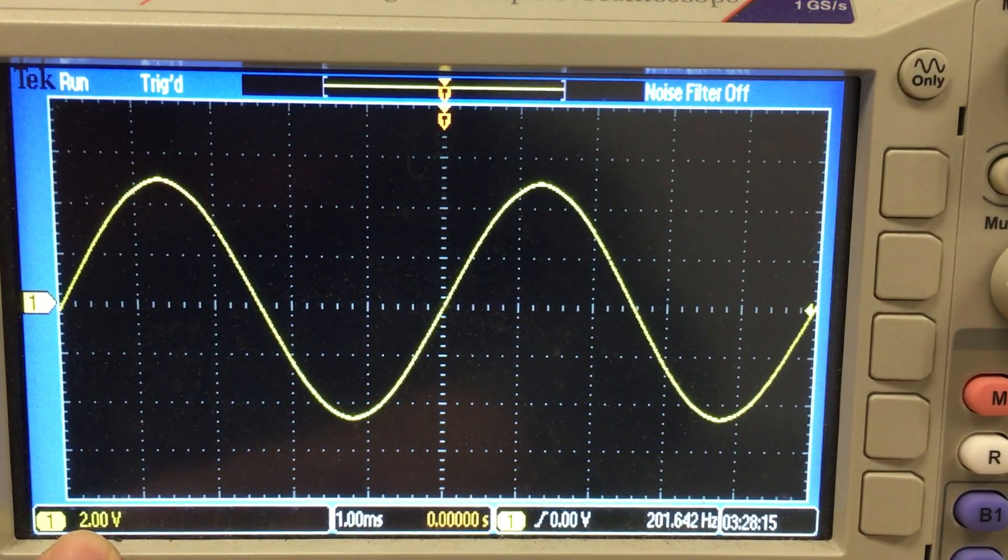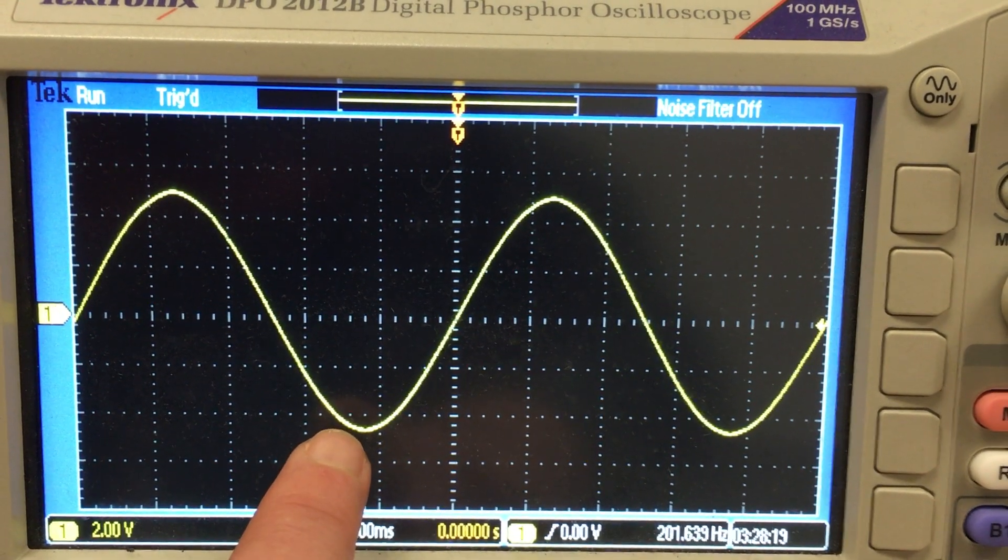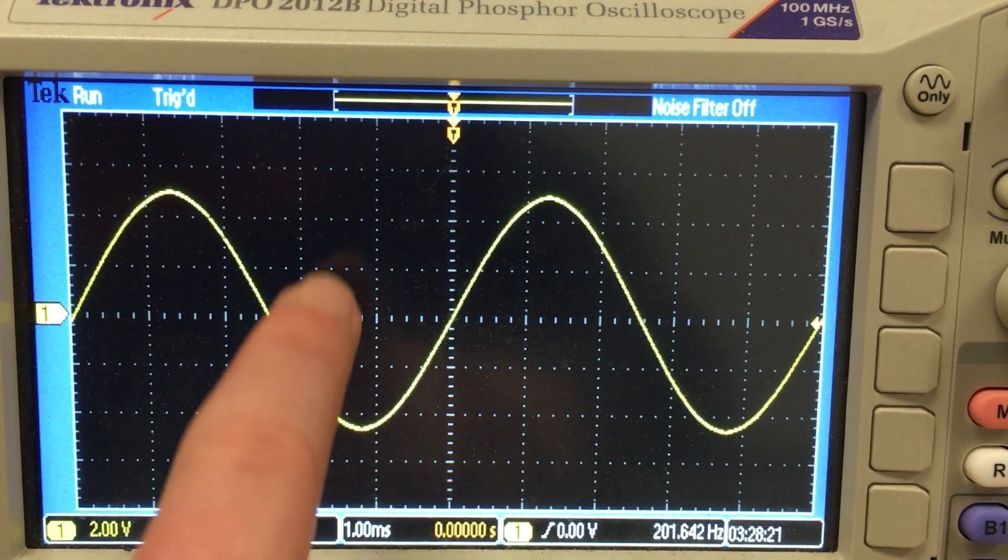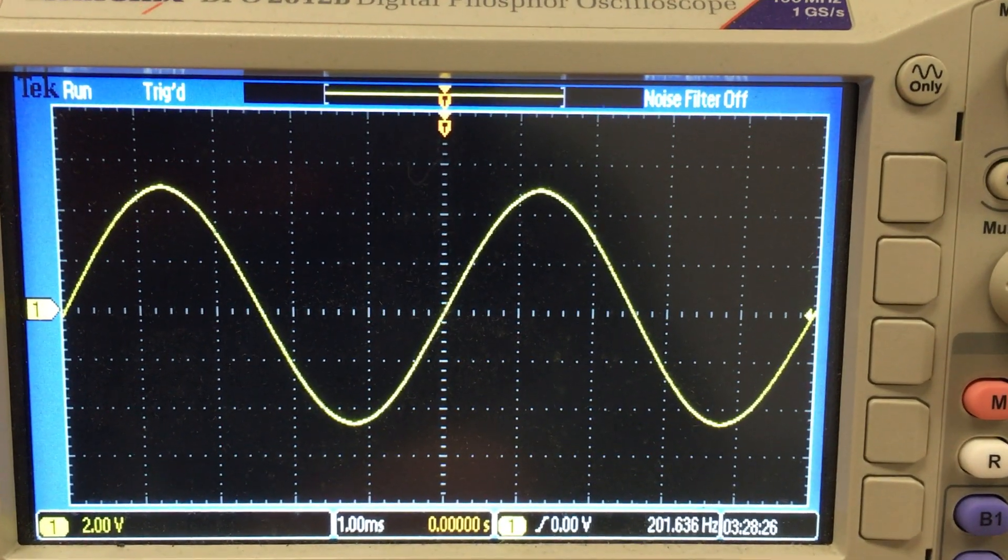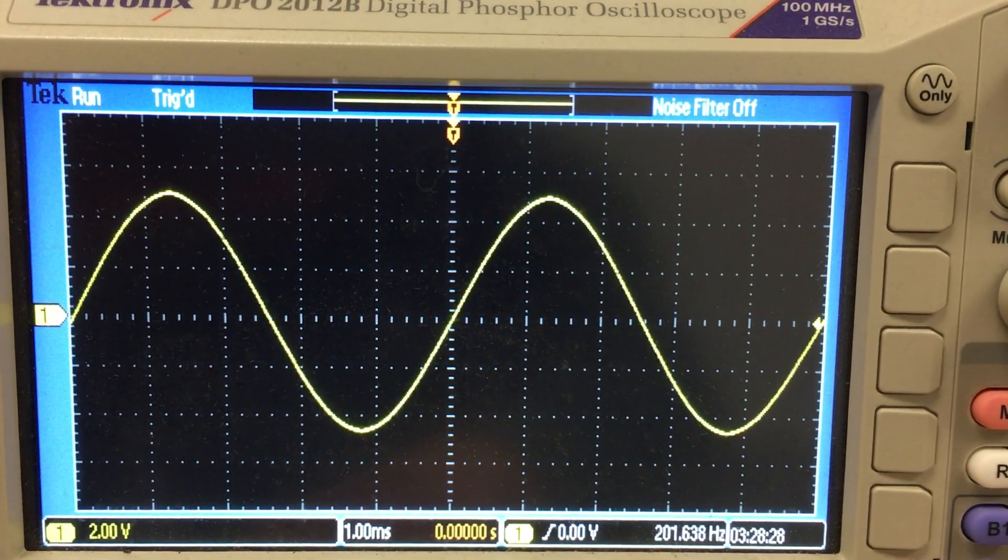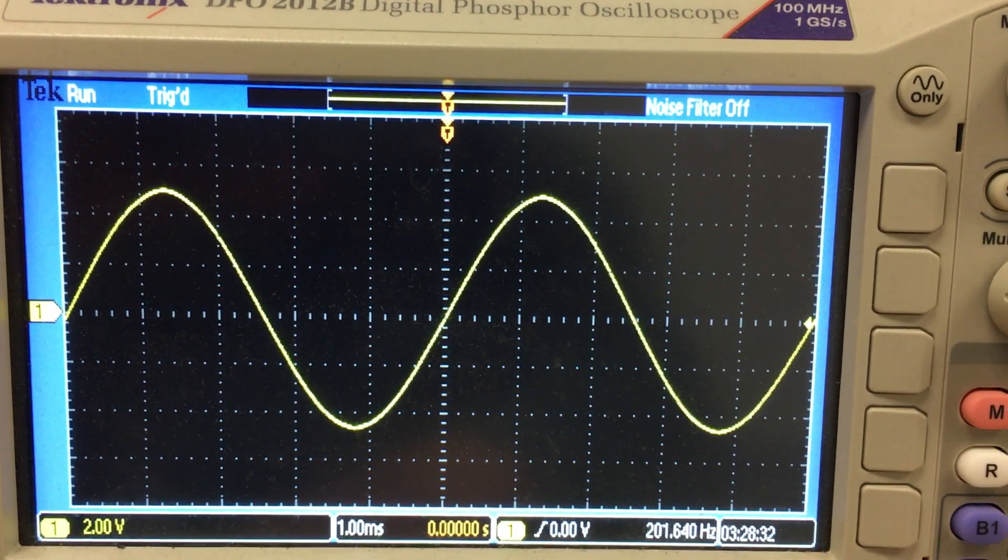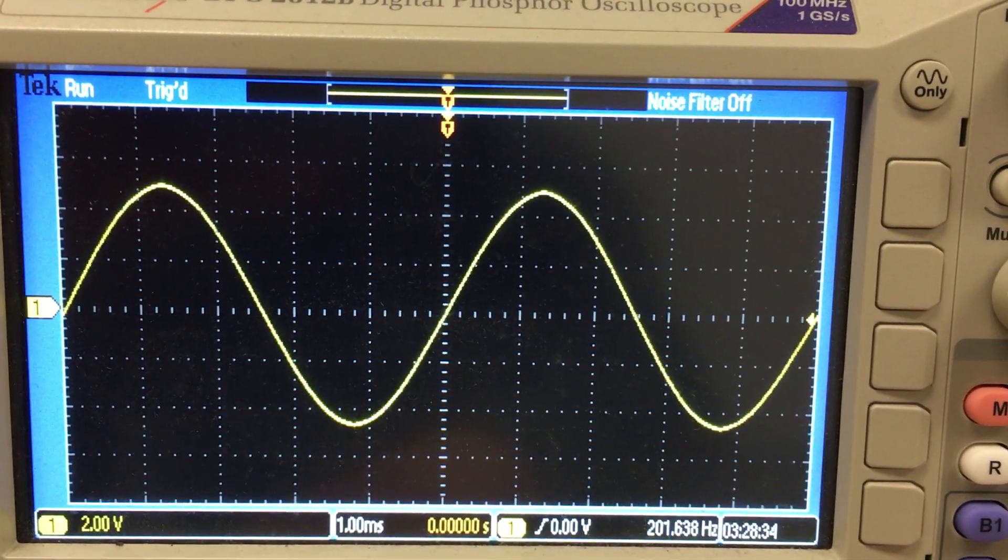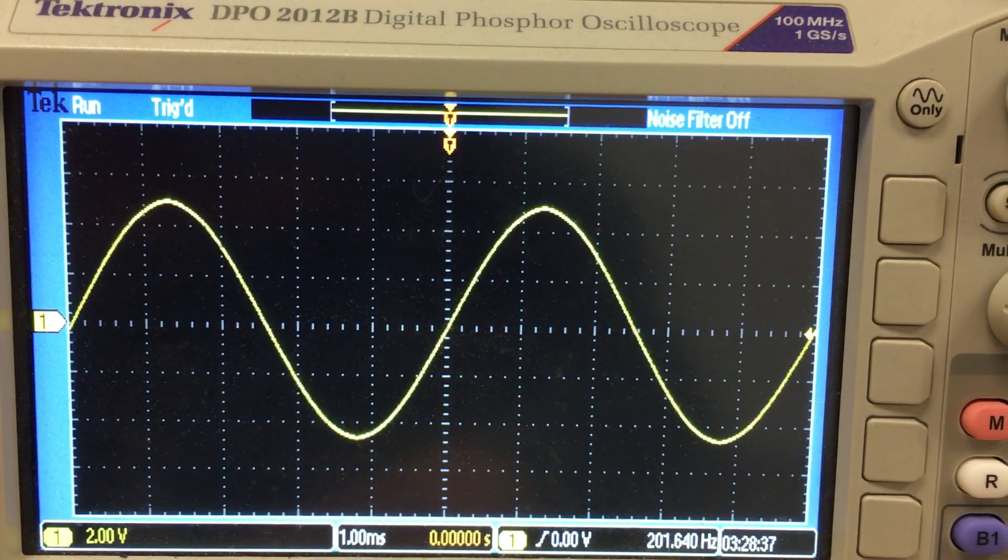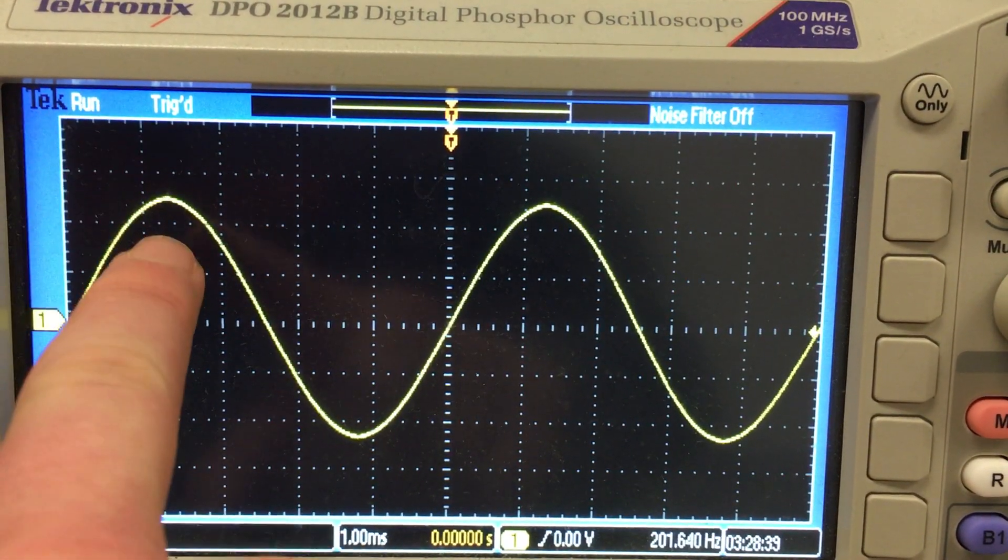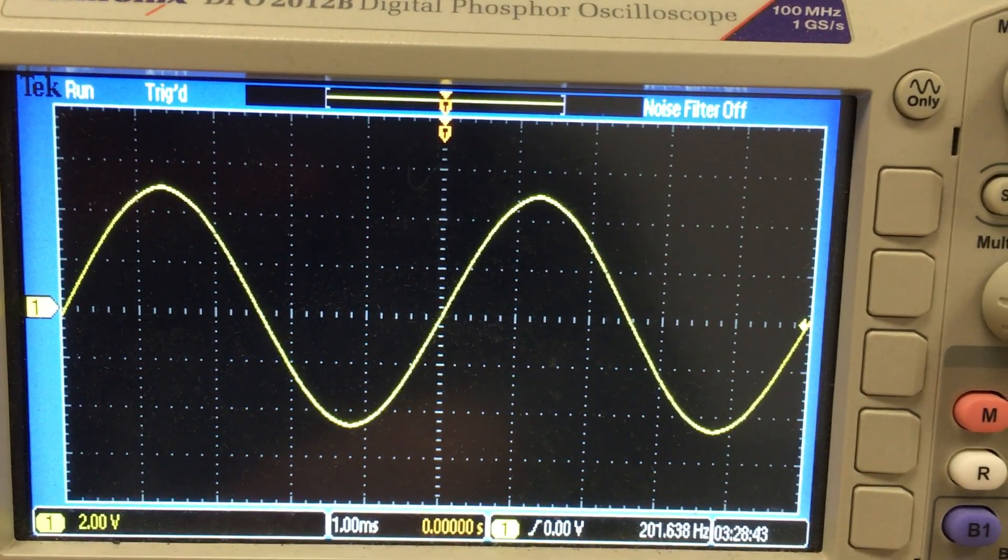Let's take a look. At 2 volts per box, so this thing is from trough to top, like, 4 boxes plus, maybe another half a box or maybe even a full box. But from the very peak to the very trough, it's maybe 9, 10 volts. And we want something that is from zero to the peak, 1 volt. So from the peak to the trough, we want something that's only 2 volts tall.